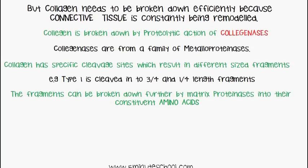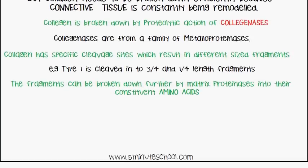Collagen is broken down by the proteolytic action of collagenases, which are enzymes from a family of metalloproteinases. Collagen has specific sites on the molecule where it can be cleaved, and when broken down it is split into different sized fragments — for example, type 1 collagen is broken into three-quarter and one-quarter length fragments. These fragments are then further broken down by matrix proteinases into their constituent amino acids. That covers collagen degradation — I hope this video has been useful, please comment and subscribe, thanks for watching.